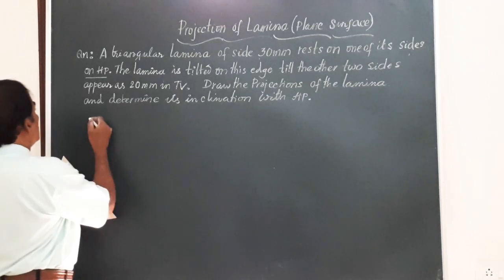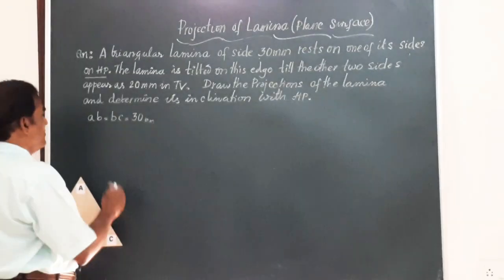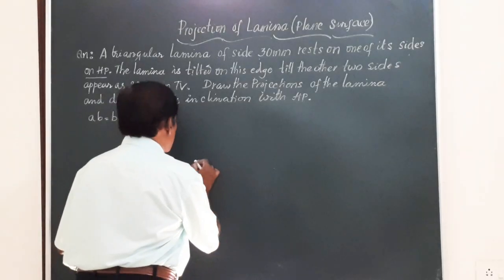Now let us start with the data given here. He says this side AB is equal to BC, each is equal to 30 mm. And he says that the lamina is tilted. So before you get into the details of that, let me mark the XY line.